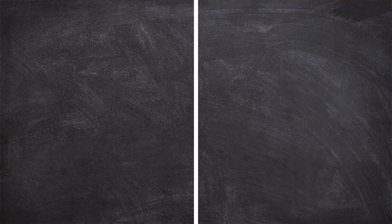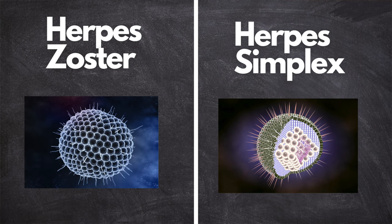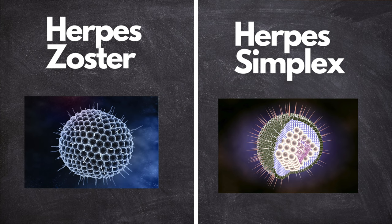To understand herpes in the eye, we must first divide the virus into two different types: herpes zoster and herpes simplex. Although they share the same name of herpes, they do behave slightly differently.